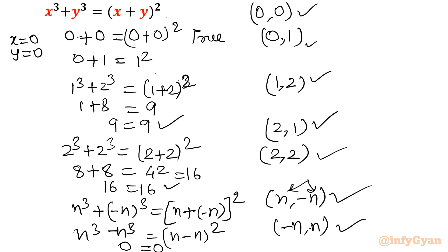So there are infinite sets of ordered pairs from the first equation, namely (n, minus n) and (minus n, n) for all integers n. The finite solutions are (0,0), (0,1), (1,0), (1,2), (2,1), and (2,2). Thank you so much for watching. I hope you liked this video. Please don't forget to subscribe to my channel.